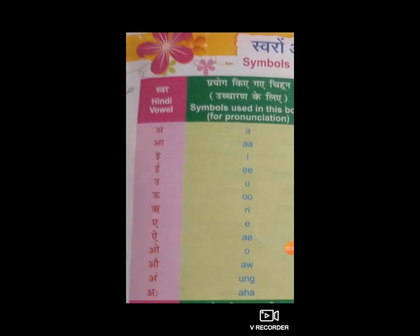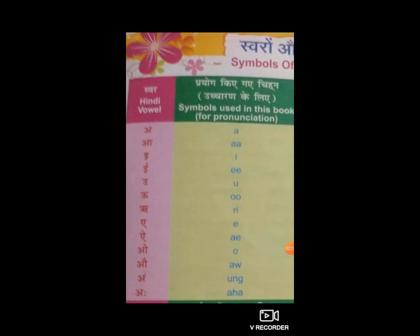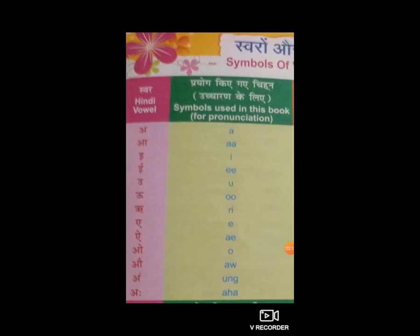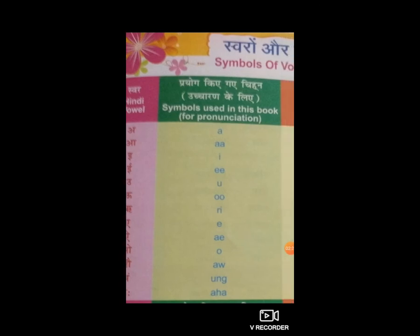अब होगा 'ऋ' - RI। RI से ऋषि: R, I, S, H, I। अब होगा 'ए' - यानि की E। ए से एक: E, K।